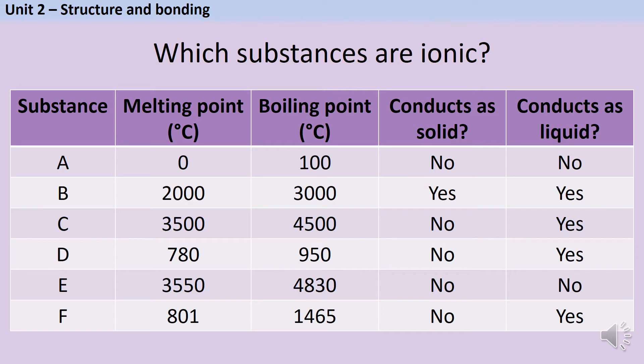The first substance in this table has a melting point of zero and a boiling point of 100. So at room temperature, about 20 degrees C, it's going to be a liquid, and therefore it's clearly not an ionic substance. B looks slightly more promising because it does have a very high melting point and boiling point, but when it's a solid, it already conducts. So this is probably a metal. It's certainly not an ionic substance.